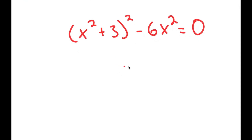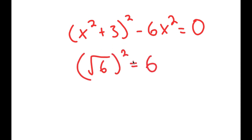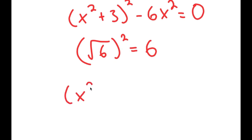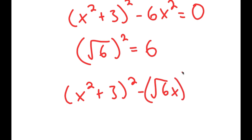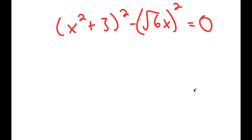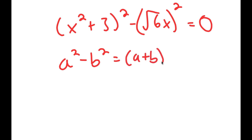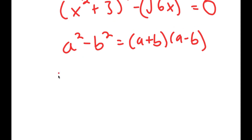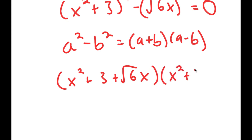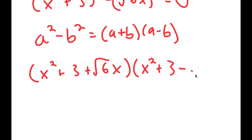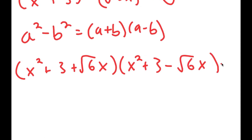Now remember that the square root of 6 squared is equal to 6. So what I'm going to do is rewrite this as x squared plus 3 squared minus the square root of 6 times x, all squared, is equal to 0. The reason I did that is because now I can use the property a squared minus b squared equals a plus b times a minus b. So this turns into x squared plus 3 plus the square root of 6 times x, times x squared plus 3 minus the square root of 6 times x, is equal to 0.